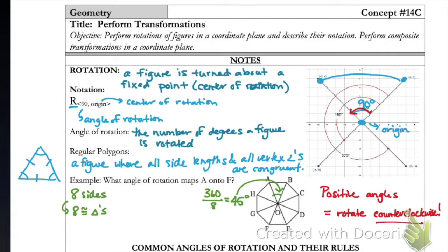Since we are trying to map A onto F, I just need to count how many triangles there are between A and F. There are three triangles, so I take the central angle of 45 degrees times three, and the angle of rotation that maps A onto F is 135 degrees.